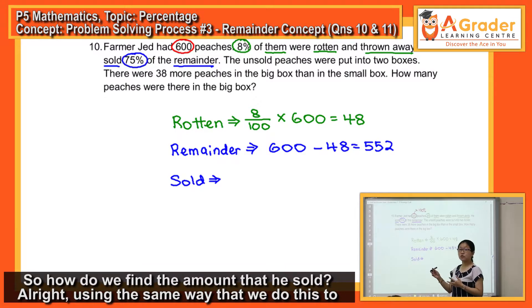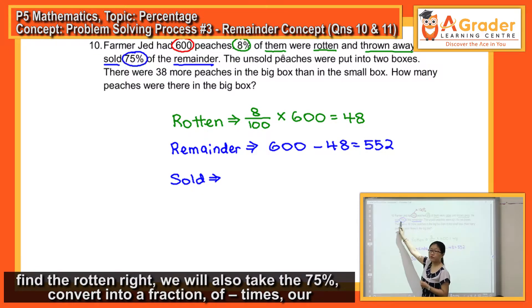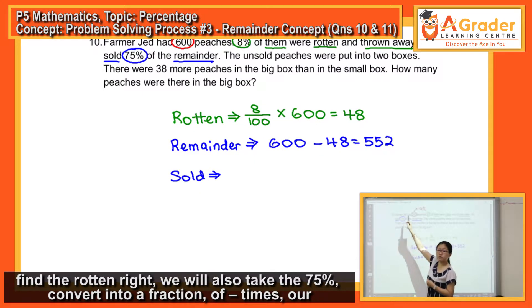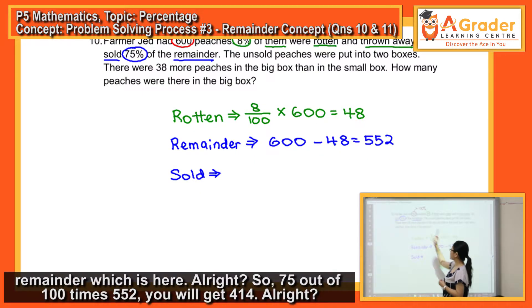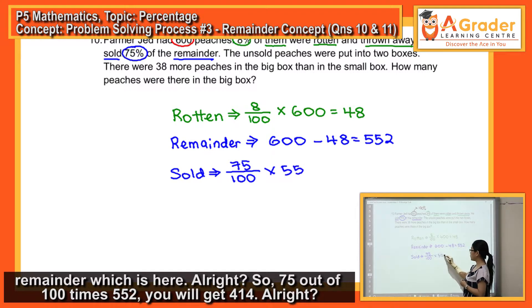Using the same way as how we do this to find the rotten, we will also take 75%, convert into a fraction, times our remainder which is here. So 75 out of 100 times 552, you will get 414.